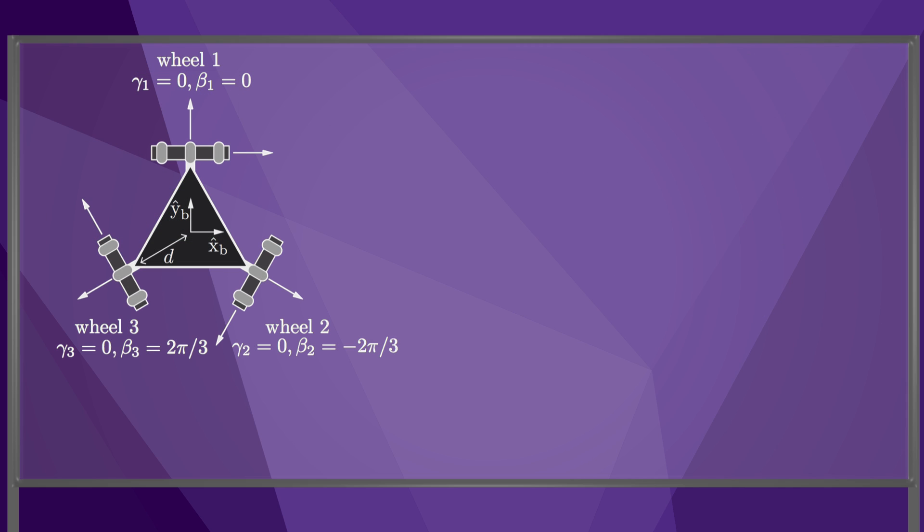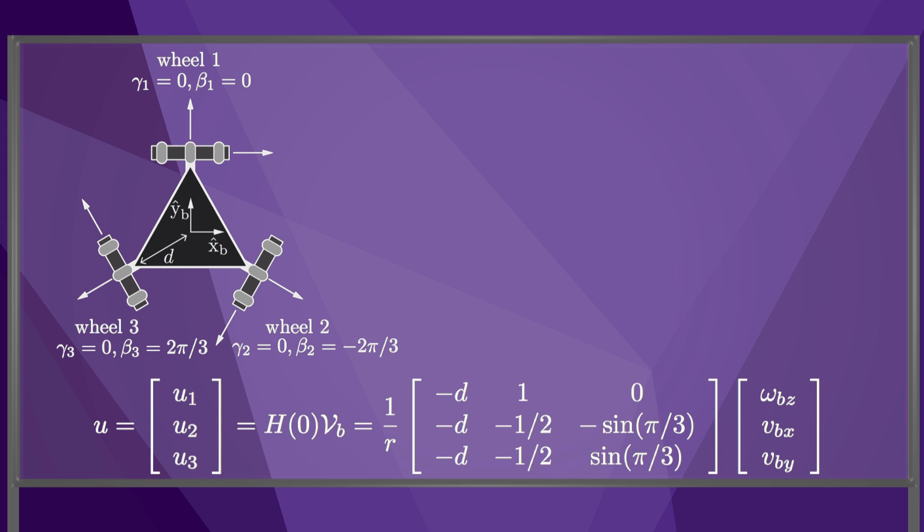We can apply this kinematic modeling to a robot with 3 omni wheels at the corners of a triangle. The H matrix is 3 by 3, as shown here. R is the radius of the wheels, and D is the distance of the wheels from the center of the triangle.